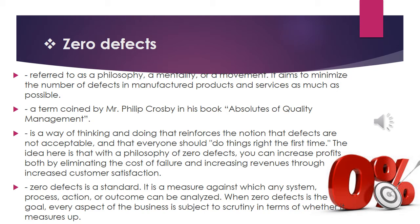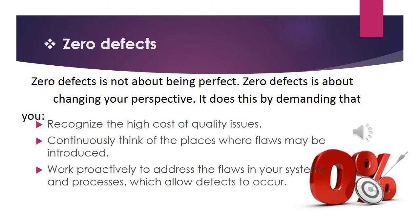When zero defects is the goal, every aspect of the business is subject to scrutiny in terms of whether it measures up — meaning every aspect is under critical observation, examination, and inspection. Zero defects is not about being perfect; it is about changing your perspective. It demands that you recognize the high cost of quality issues, continuously think of places where flaws may be introduced, and work proactively to address flaws in your systems and processes which allow defects to occur.